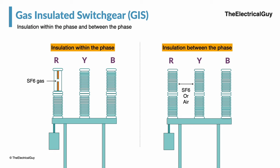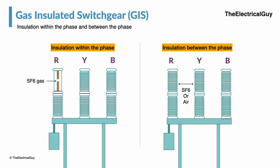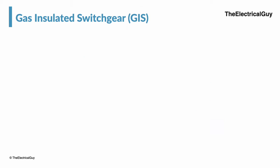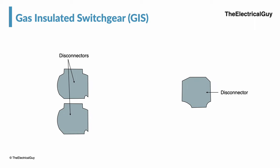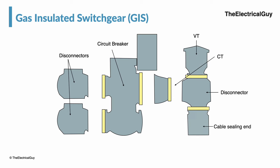On the other hand, in AIS technology only insulation within the phase is provided by SF6 gas, and insulation between the phases is air — hence the name air insulated switchgear. In GIS technology all the switchgear, like disconnector and earthing switch, circuit breaker, current transformer, and voltage transformer, are insulated by SF6 gas. Not only this, even the bus bars are also insulated by SF6 gas.